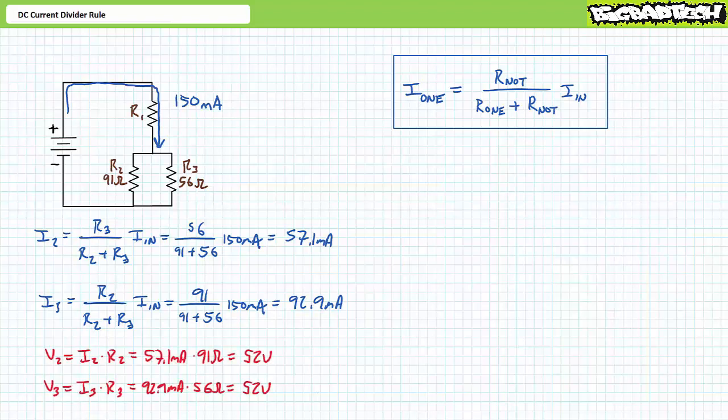Lastly, an application of Ohm's Law to either resistor demonstrates both R2 and R3 experience a 52-volt drop. Why? Because voltage across elements in parallel is the same. We'll examine the electrical properties of series parallel circuits in later lectures. Until then, that's all I've got for you today.